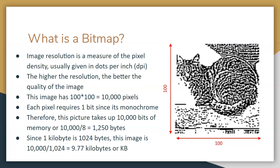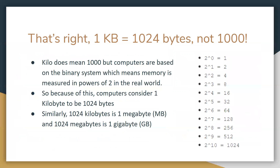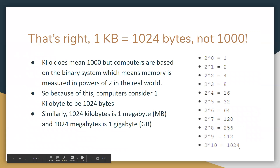Since one kilobyte is 1,024 bytes, this image is 9.77 kilobytes, or KB. One kilobyte is 1,024 bytes, not 1,000. Even though kilo does mean 1,000, since computers are based on the binary system, memory is measured in powers of two. We work our way to the closest thing to 1,000, which is 2 to the 10, which is 1,024. So computers consider one kilobyte to be 1,024 bytes.